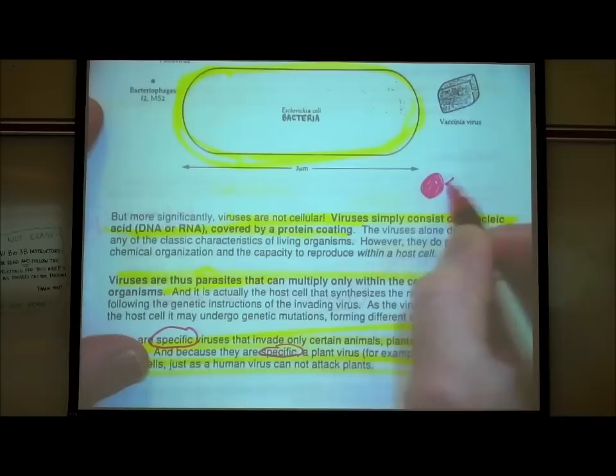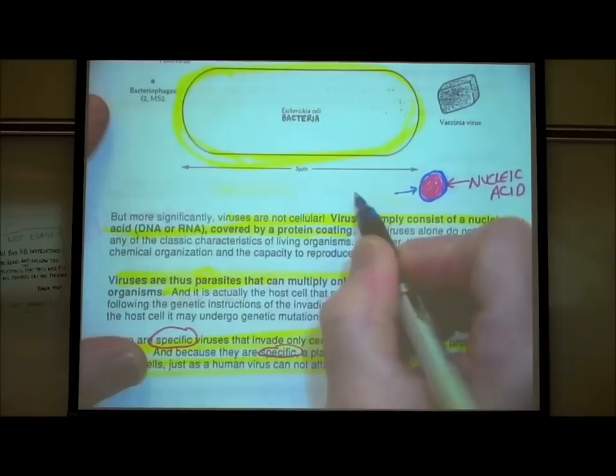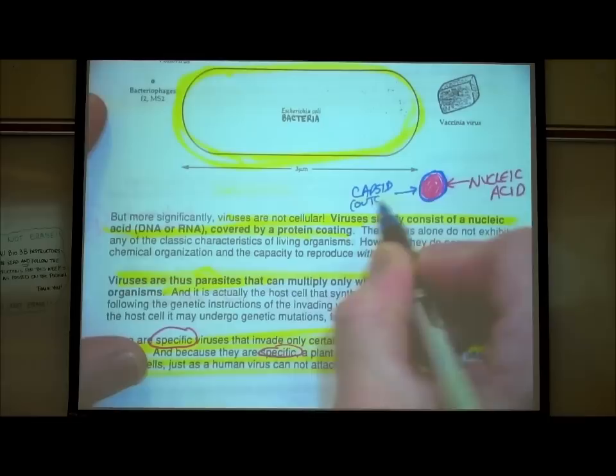There's an inner core made up of a nucleic acid, either DNA or RNA, and then surrounding that is an outer covering that is a protein. This outer protein is called a capsid — C-A-P-S-I-D.